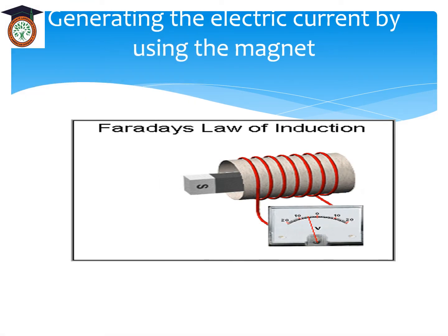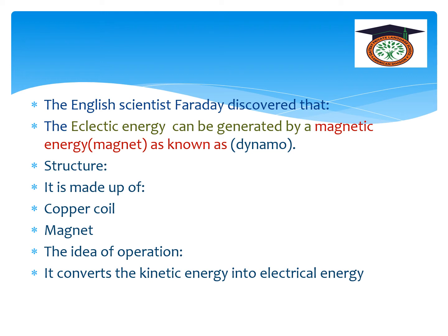Generating electric current by using a magnet: the English scientist Faraday discovered that electric energy can be generated by magnetic energy. This device is known as the dynamo. The dynamo converts kinetic energy into electrical energy. It is made up of a copper coil and a magnet.